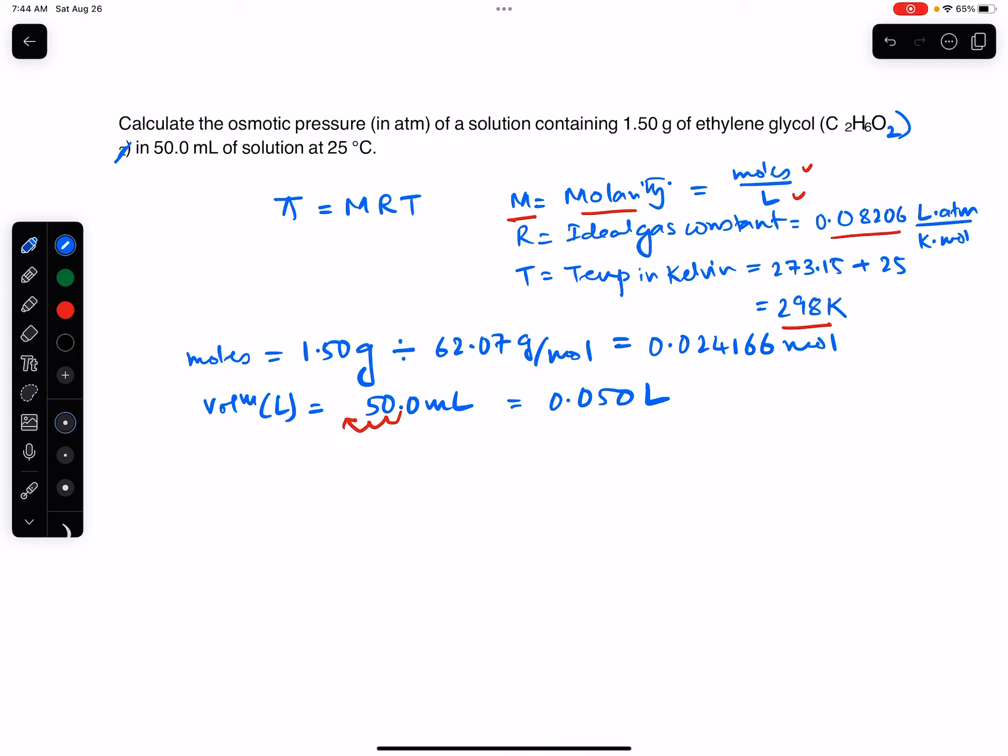So now we have everything we need to figure out the osmotic pressure. So let's go ahead and plug that into this equation. So π equals M, which is going to be the moles, 0.024166 moles over the liters, which is 0.050 liters times the R, the ideal gas constant, 0.08206 liter atmosphere per Kelvin mole, times the temperature in Kelvin, which is 298 Kelvin.